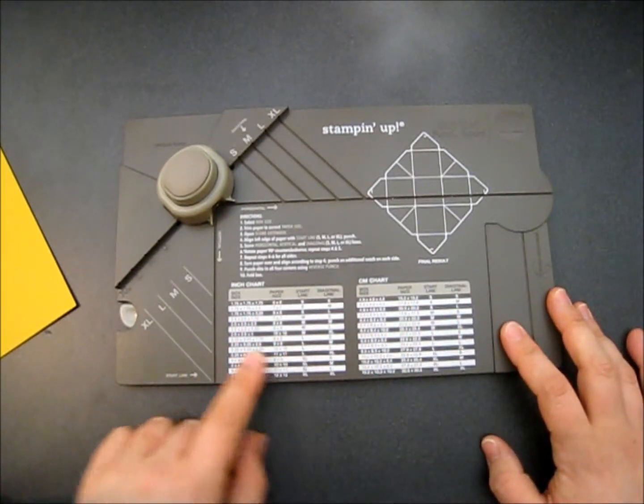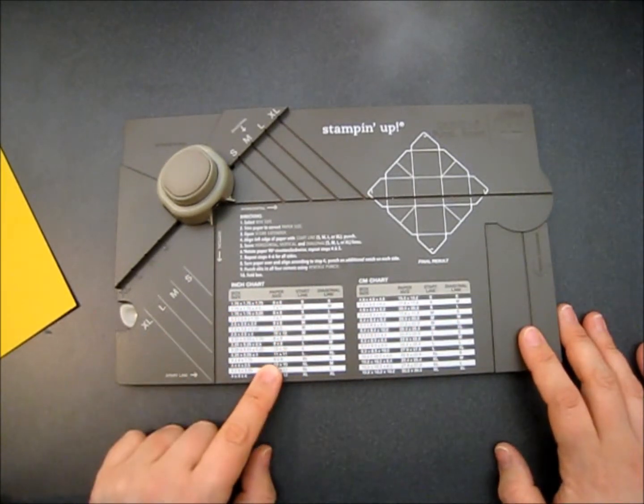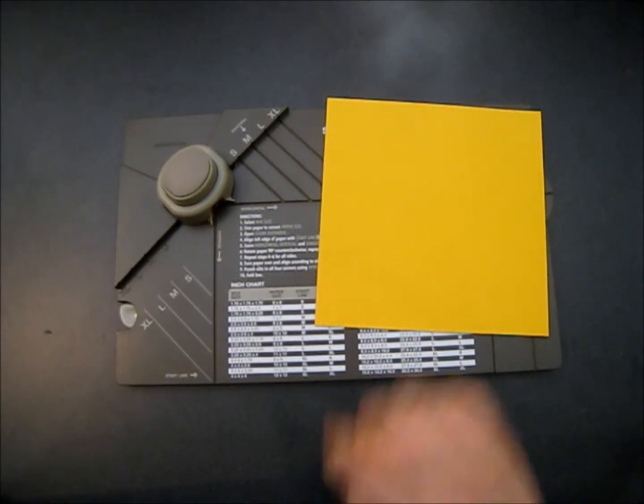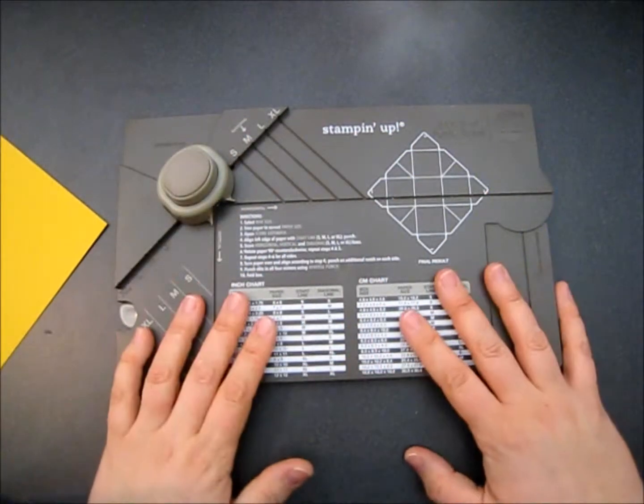The first thing you're going to do is, much like the envelope punch board if you have it, is you're going to look up your paper size for your box. And today we're just going to make the smallest box that they've got on here, the 6x6. So that's what I've cut my cardstock to. So we've got our piece of cardstock and we've got our board.